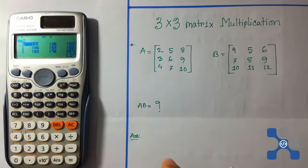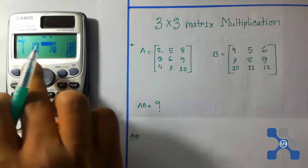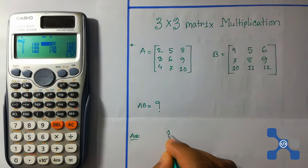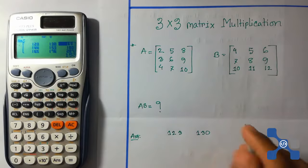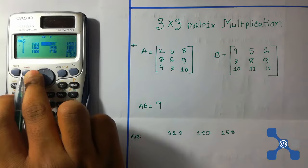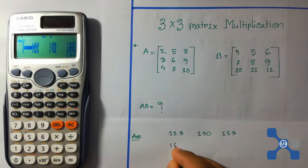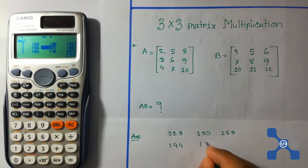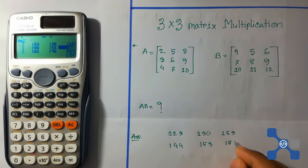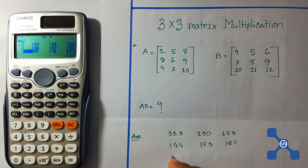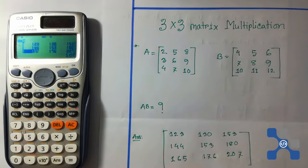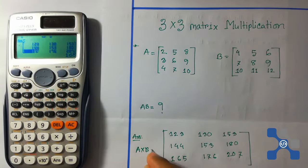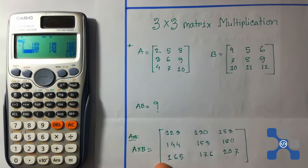OK, we see that the resultant matrix is 123, 133, 130, 153, 144, 153, 180, 165, 176, 207. This is the result A into B matrix.